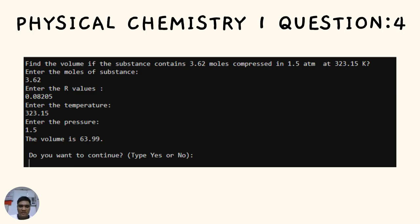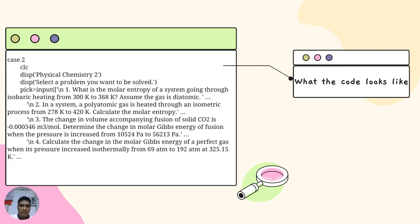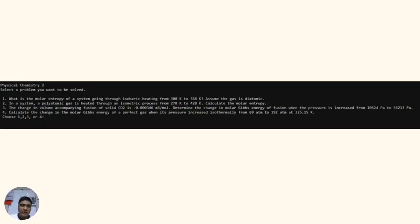Let's proceed to the next subject, which is Physical Chemistry 2. This section of the code provides solutions to all Physical Chemistry 2 issues. It includes R values, CV, initial and final temperatures, as well as formulas to solve for molar entropy and Gibbs energy. If we enter number 2, Physical Chemistry 2 will provide the four questions that we need to answer.